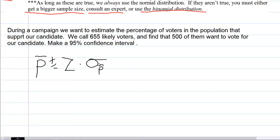If we called 655 people and 500 of them want to vote for our candidate, what is the proportion of people in our sample who said yes? It's 500 divided by 655. So p bar, sometimes they'll give this to you in a problem and sometimes they'll expect you to calculate it, but it's just 500 over 655, 0.763. 76.3% of the people said we'll vote for your guy.